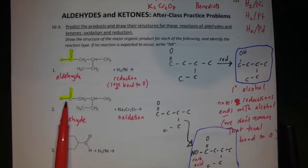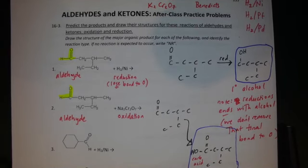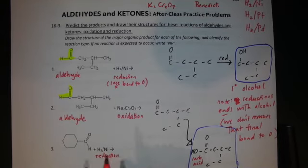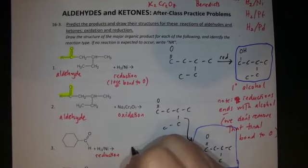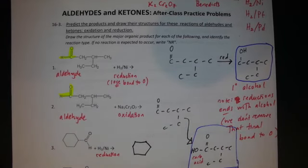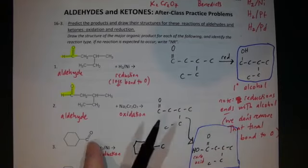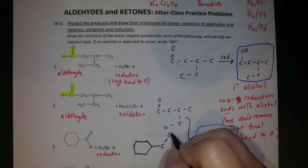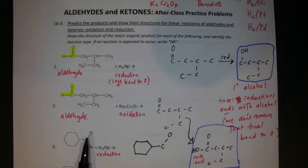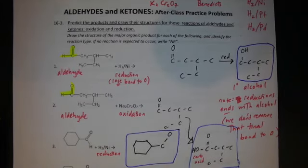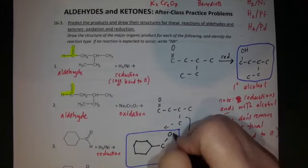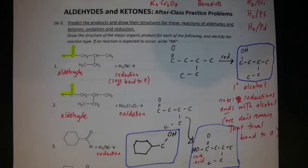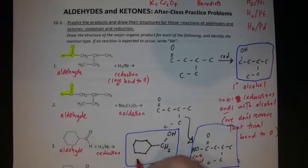An aldehyde oxidized produces a carboxylic acid. For reduction of a cyclic ketone: keep it a ring — the ring stays as is. The carbon with two bonds to O — take away one bond, leaving only one bond to O. That's the answer. Draw H's back in: oxygen showing one bond gets an H, the carbon showing two bonds gets two more H's. We started with a cyclic aldehyde and end up with a primary alcohol.